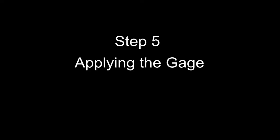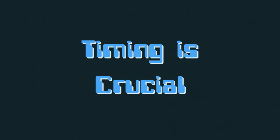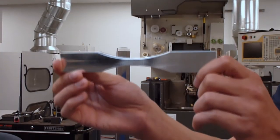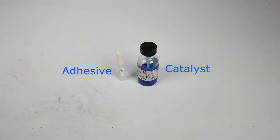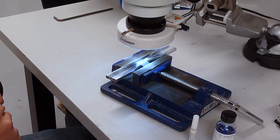For the next segment, make sure to have all materials available before beginning as timing will be crucial. You will need the part in question, the layout block with the gauge, the catalyst and adhesive, gauze, and a working microscope.